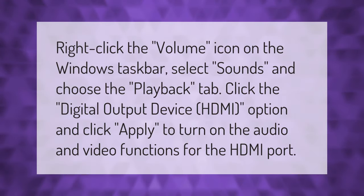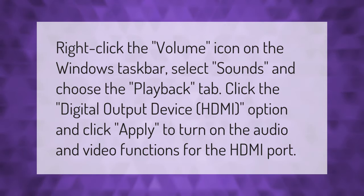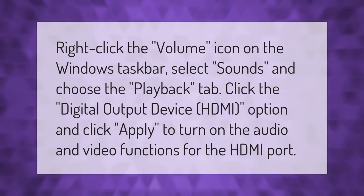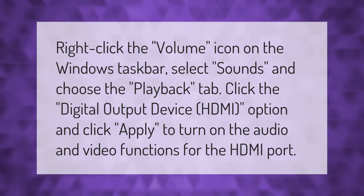Right-click the volume icon on the Windows taskbar, select Sounds, and choose the Playback tab. Click the Digital Output Device (HDMI) option and click Apply to turn on the audio and video functions for the HDMI port.